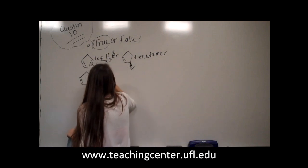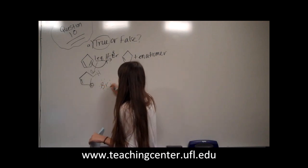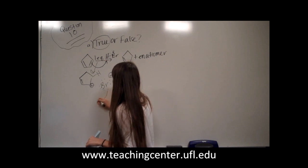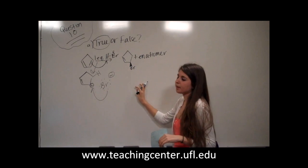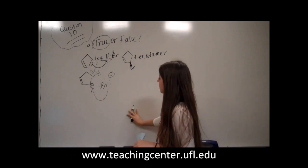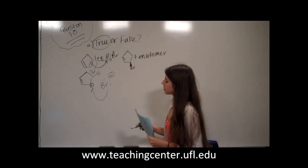So then your Br- will come in either from the top face or the bottom face. That's why we get plus an enantiomer. And so that product is formed. So the answer is true.